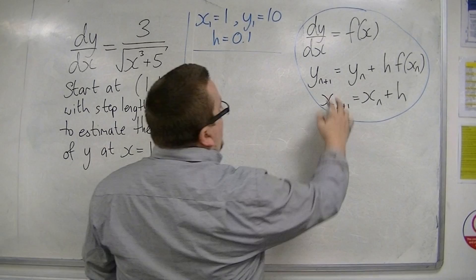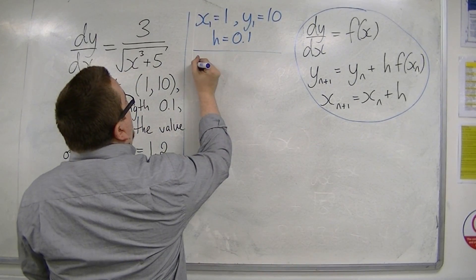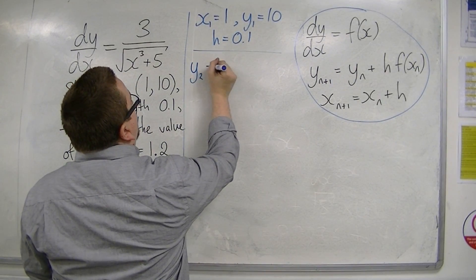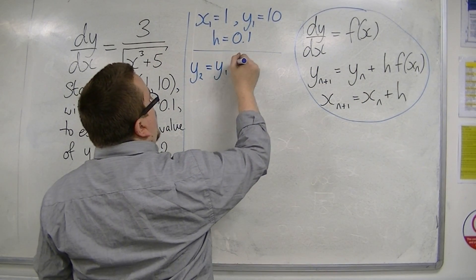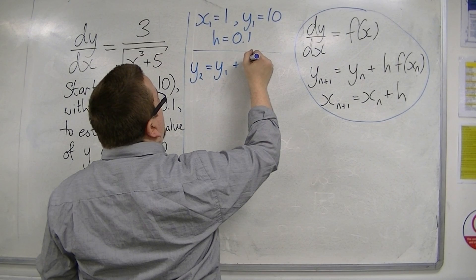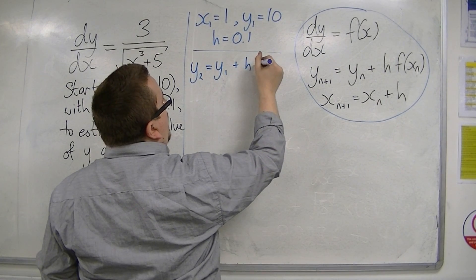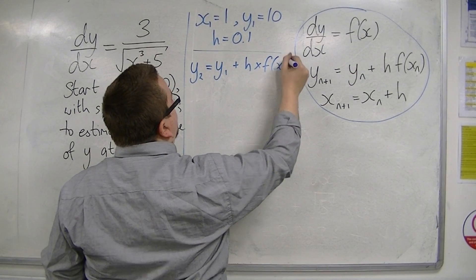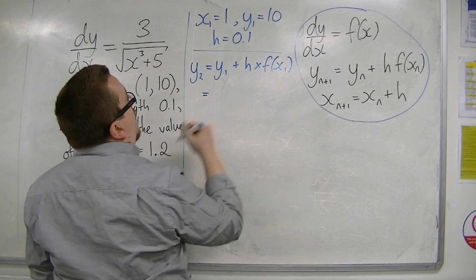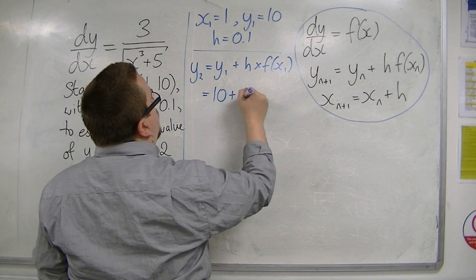So what I want to do is work out what y₂ is going to be. y₂ is going to be y₁ plus h, so 0.1 times f(x₁). So y₁ was 10, h is 0.1.